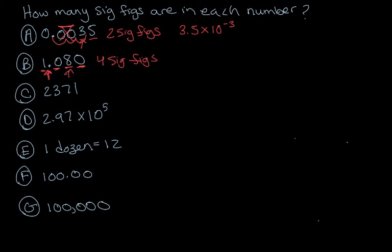For C, we have four non-zero numbers, so that should be really easy. It's four sig figs.